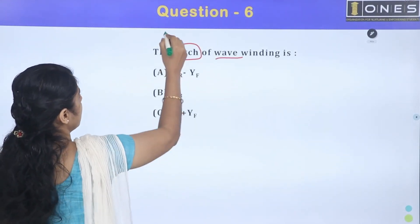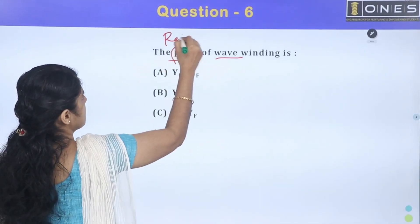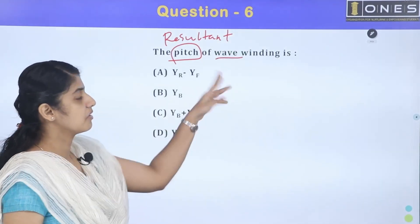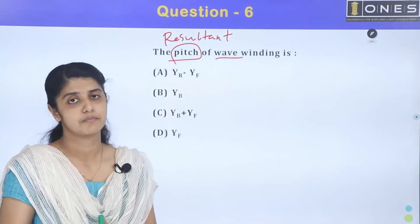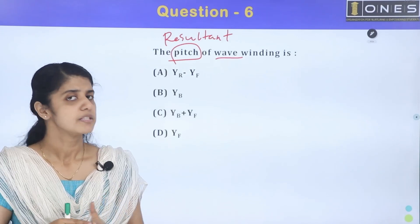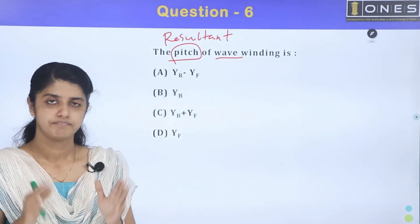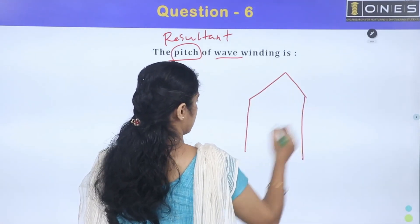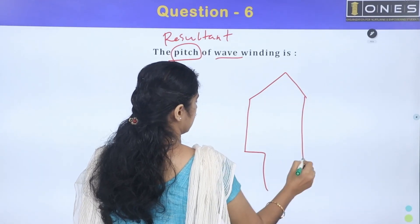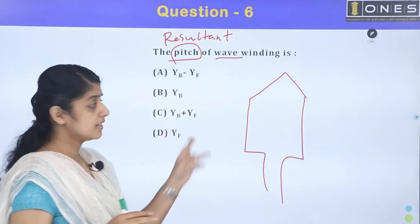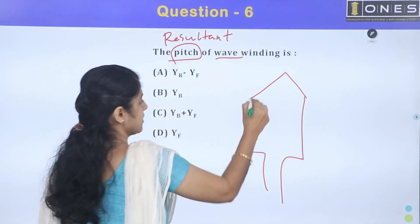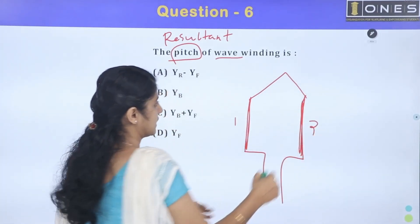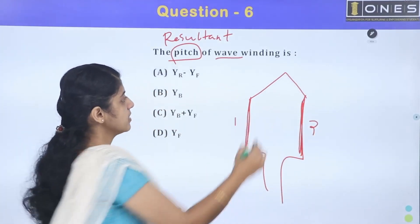Resultant pitch is the key concept here. Wave winding is defined by its resultant pitch. We are going to look at the coil side — we are going to place the windings and place two conductors: first conductor and second conductor.